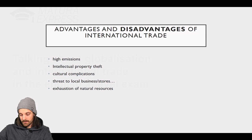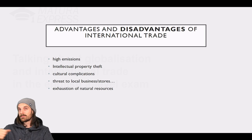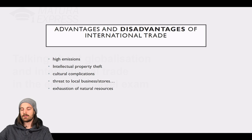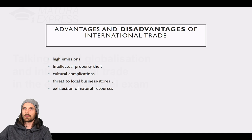Of course there are disadvantages, and there are a lot of them. First, you have high emissions — the most obvious disadvantage, at least for me. If you're ordering something from India and you want to have it shipped to Austria, you need a plane or a ship. Planes and ships create a lot of emissions. Speaking of pollution — air pollution, a lot of CO2 — which is not very good for our planet, as you already know fully.